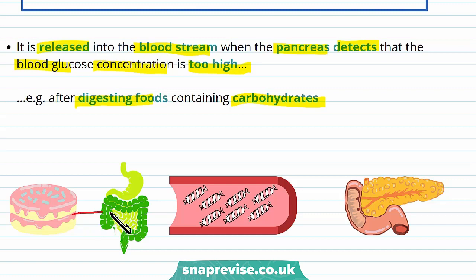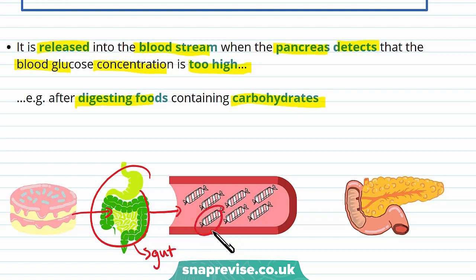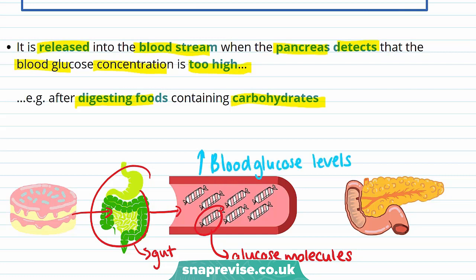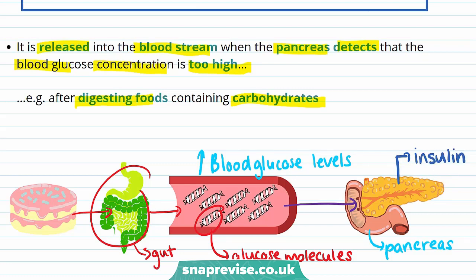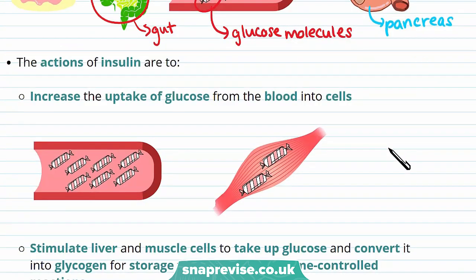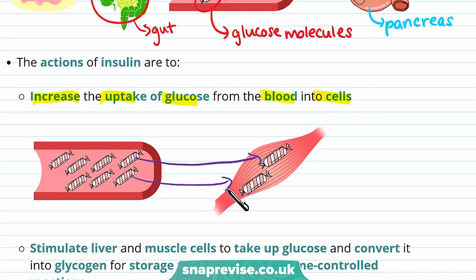So what happens after you eat a slice of cake? First, it's digested by the gut. The carbohydrates in the cake are broken down into glucose molecules. This is transferred to the blood and so the blood glucose level increases. Your pancreas then detects the rise in blood glucose levels and reacts to this by producing the hormone insulin. Now let's look at how insulin decreases blood glucose levels. The actions of insulin are to increase the uptake of glucose from the blood into cells. In this example, glucose is taken up by muscle cells.